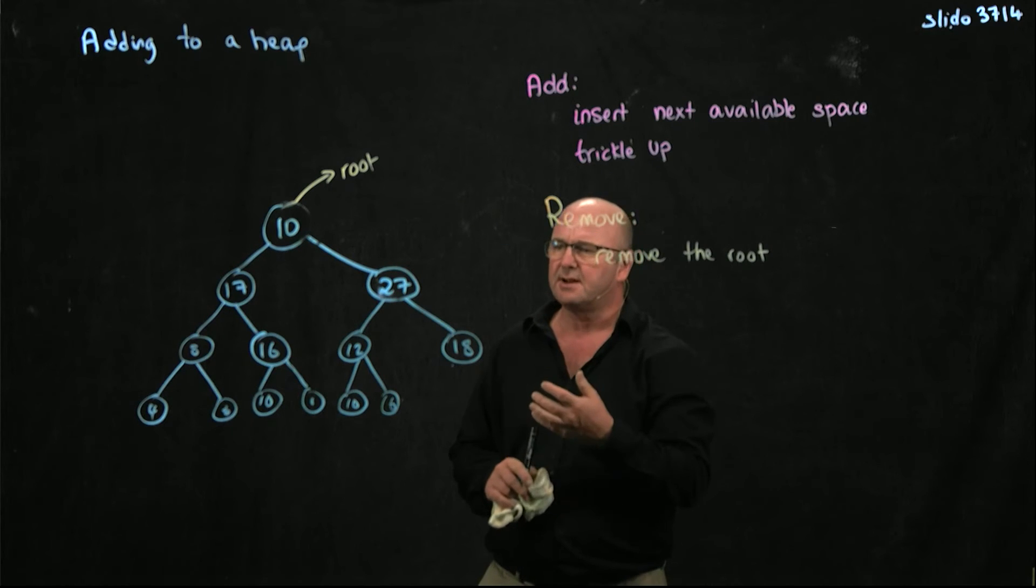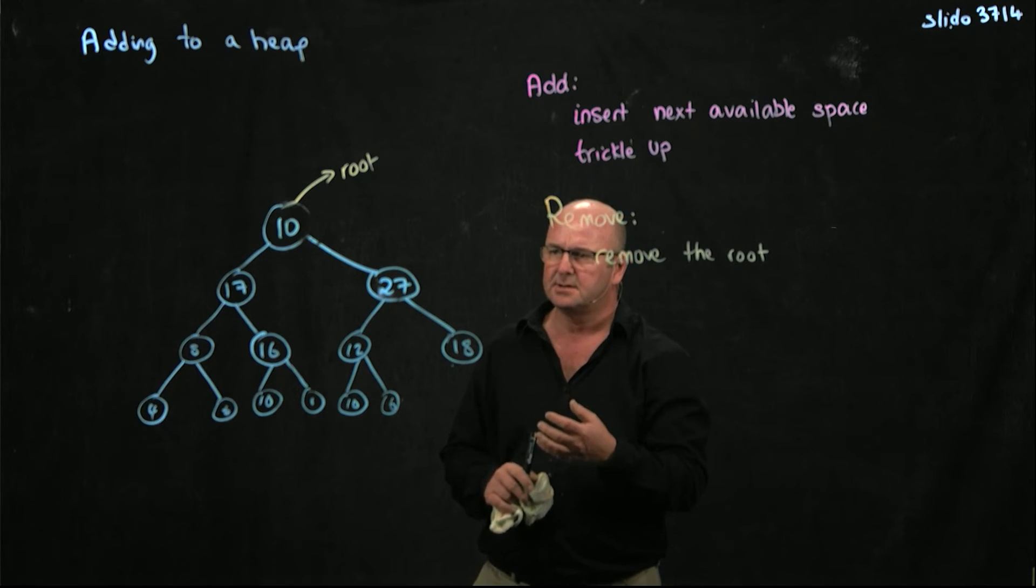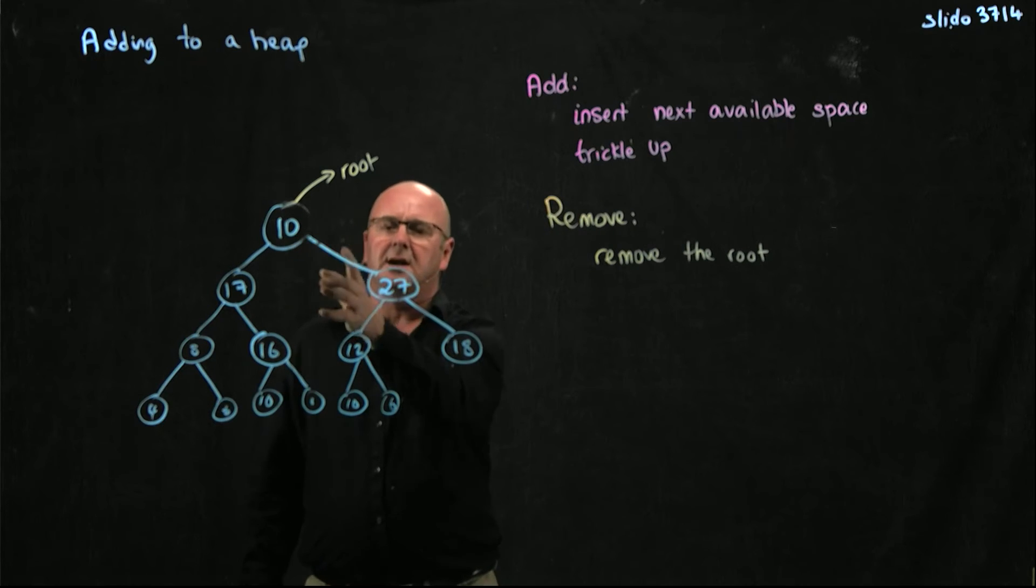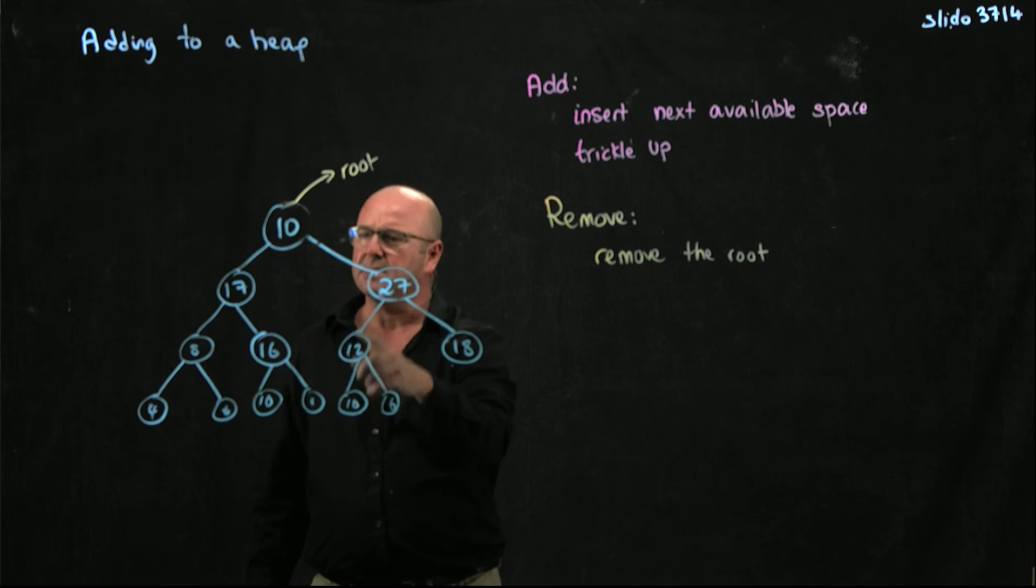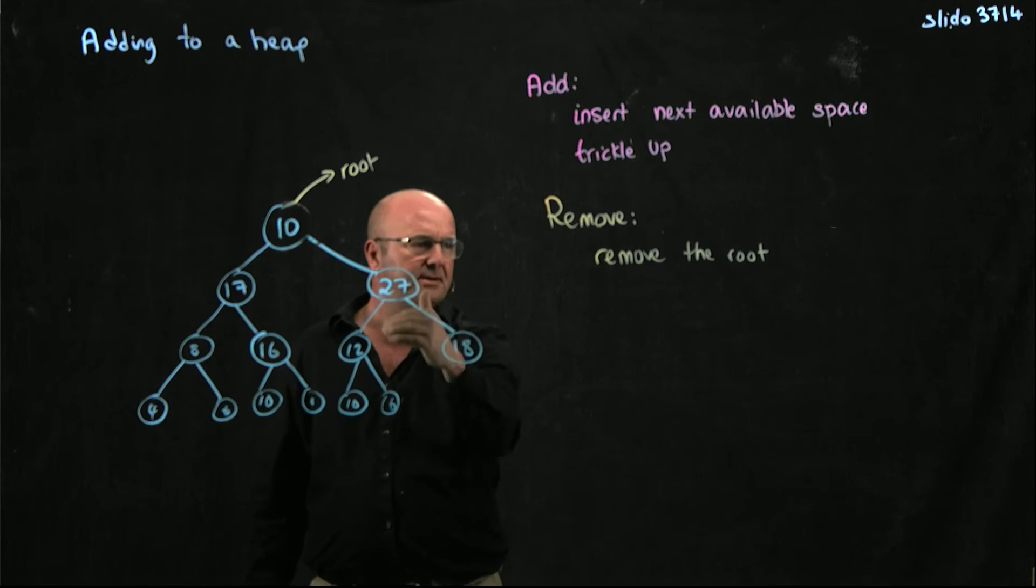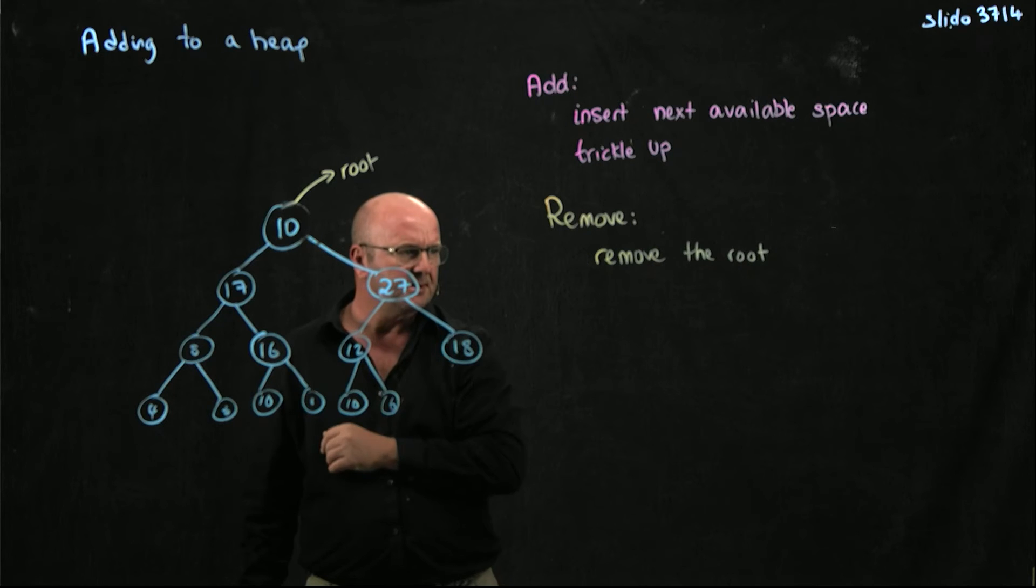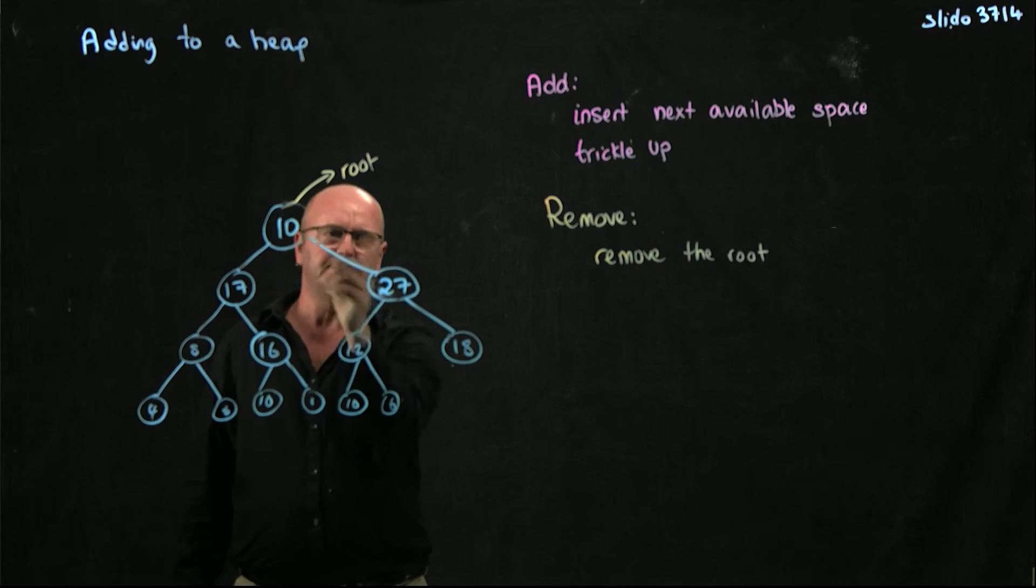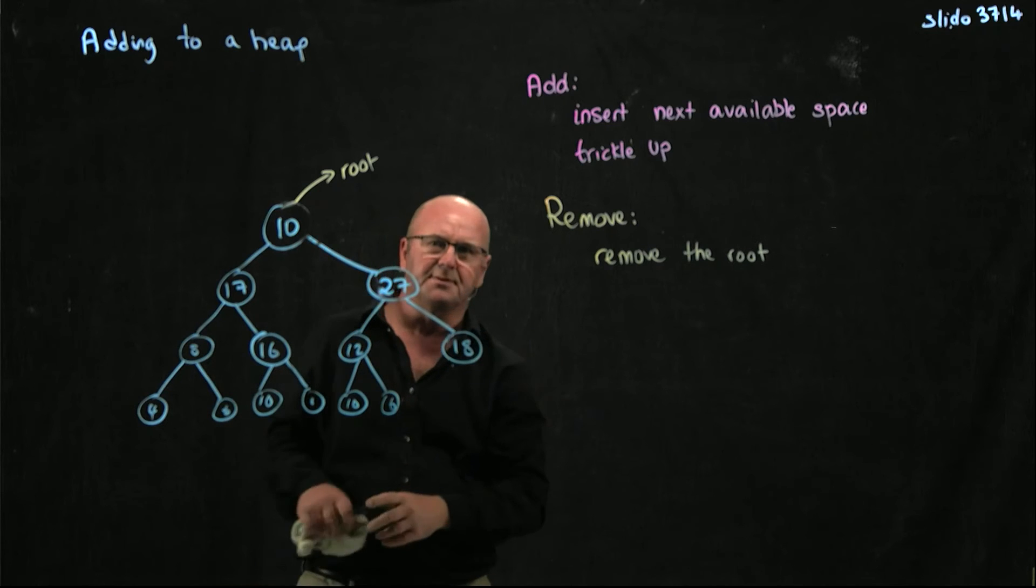That, of course, has created a heap violation. And now what I'm going to do is I'm going to take this, and I'm going to swap it with one of the children until it finds a resting place where it's smaller than the parent and bigger than the children. If I keep swapping one of the children into an empty node, I have to do that until I get to the bottom of the tree.